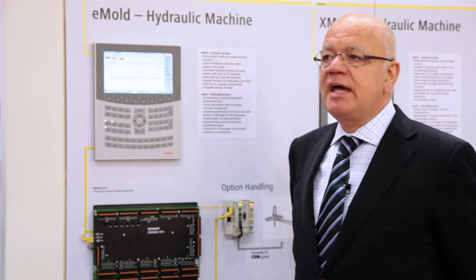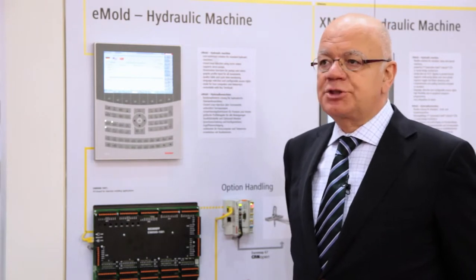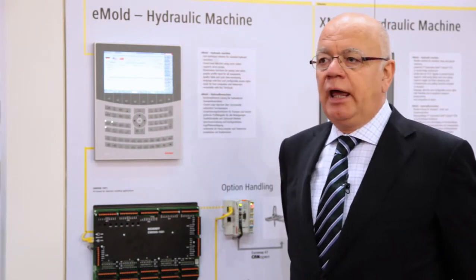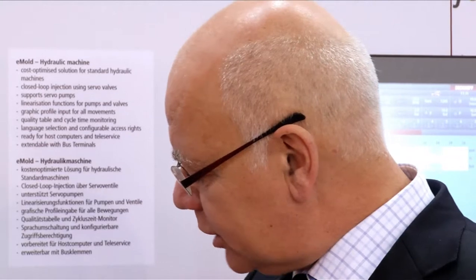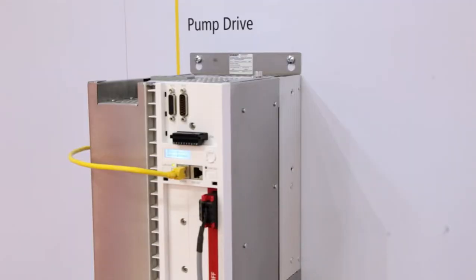The energy saving function with eMold is mainly executed by the so-called servo drive. It is possible to connect a servo motor and a constant pump to eMold, and in this way you can save energy, especially during the cooling phase of the machine.